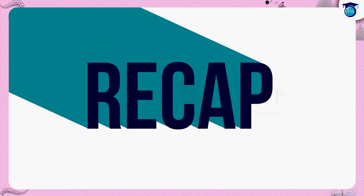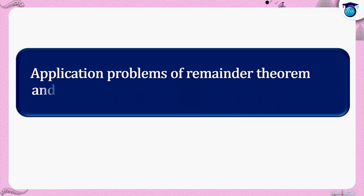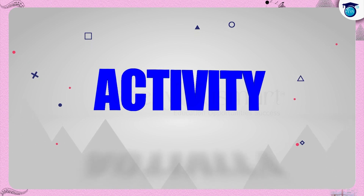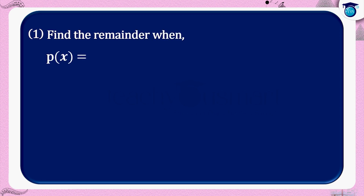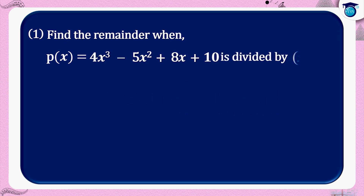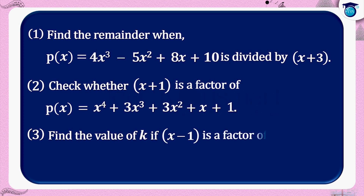Let's recall what we discussed today. We discussed some application problems of the remainder theorem and factor theorem. Before winding up, let's check how much you understood by doing an activity. 1. Find the remainder when p of x equals 4x cubed minus 5x squared plus 8x plus 10 is divided by x plus 3. 2. Check whether x plus 1 is a factor of p of x equals x to the 4th plus 3x cubed plus 3x squared plus x plus 1. 3. Find the value of k if x minus 1 is a factor of p of x equals kx squared minus 3x plus k.